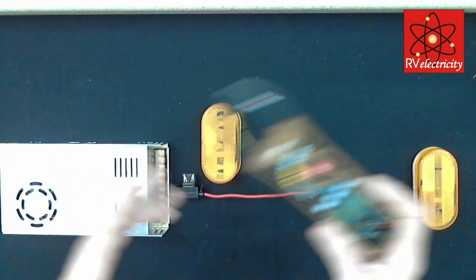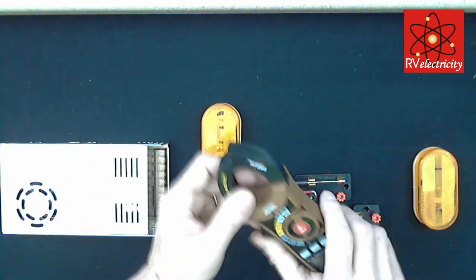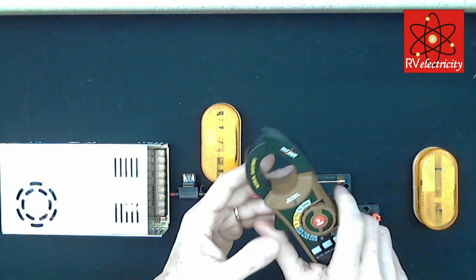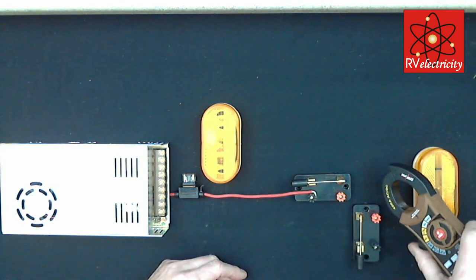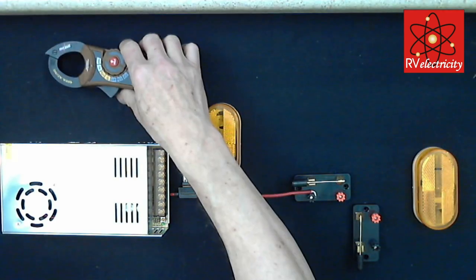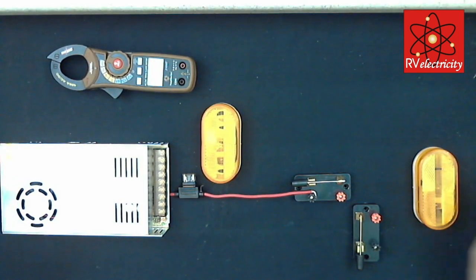Then I will use a standard clamp meter—it can be almost any DC-capable one—to show you where the current goes, where the current has stopped going, and then we can predict where the short circuit might be in the whole circuit. What do you think?